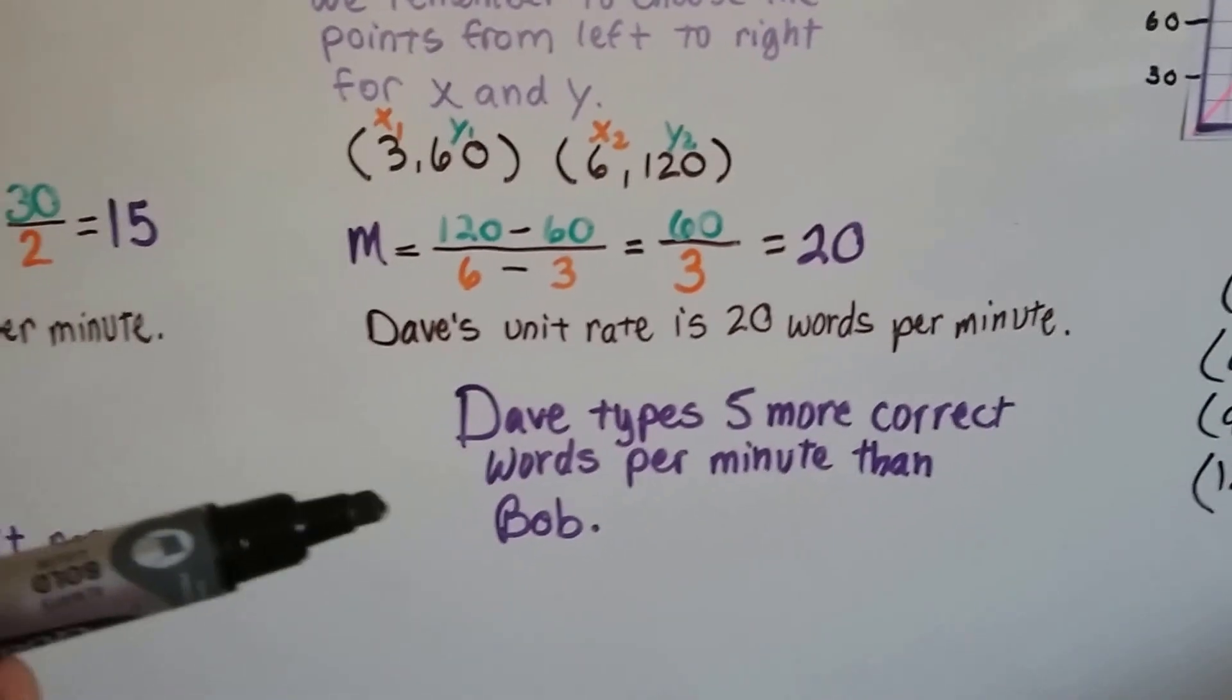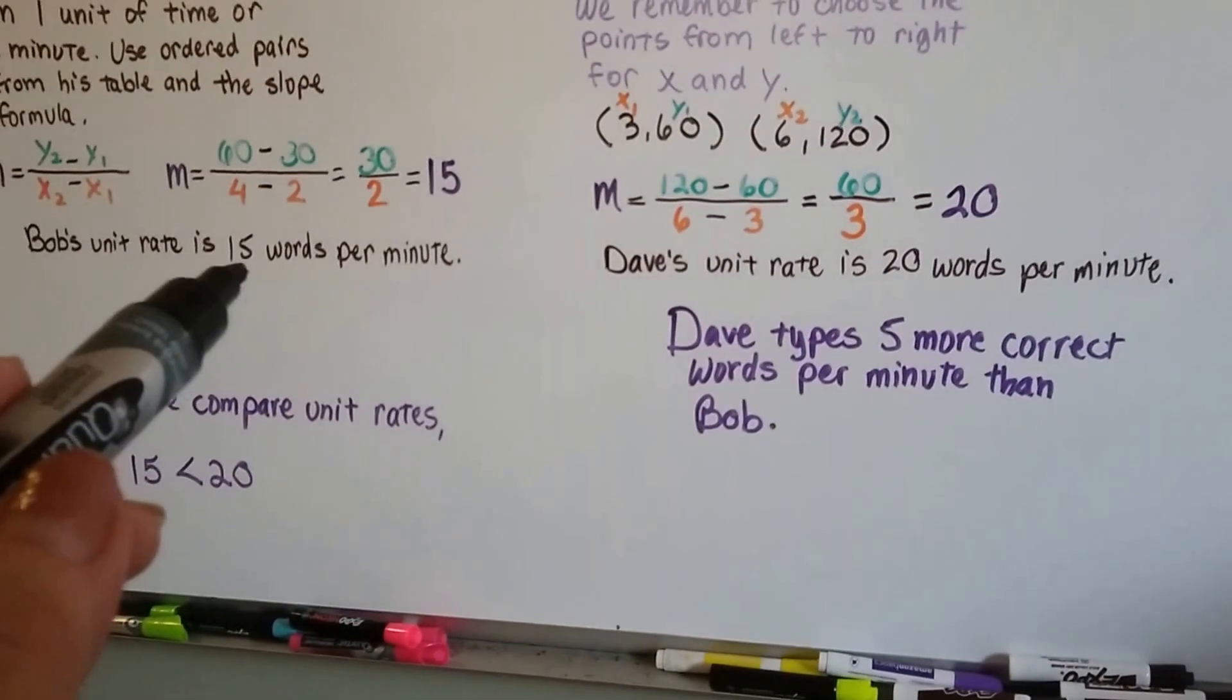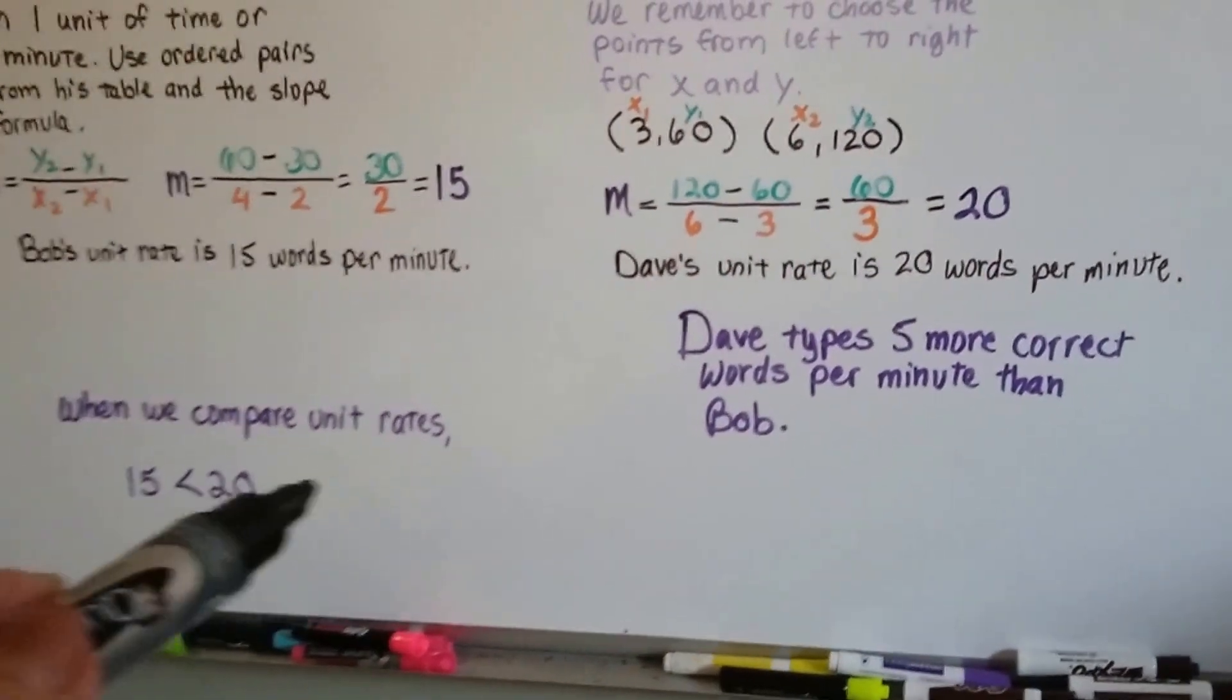That means Dave's unit rate is 20 words per minute. Well, Bob's was 15 words per minute.